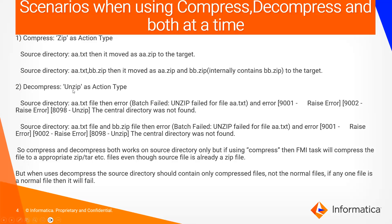For decompress with unzip as the action type: if the source directory has a.txt, then the FMI job will directly fail with an error — unzip failed for file a.txt — because a.txt is a normal file, not a compressed file, so the FMI job will get failed.